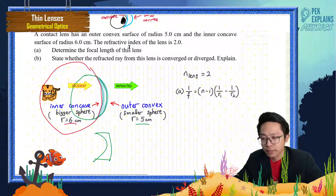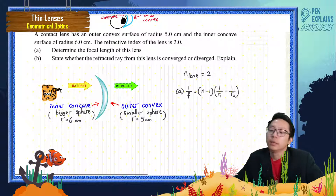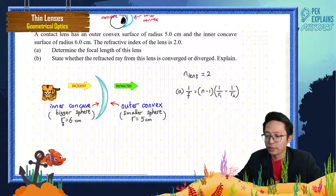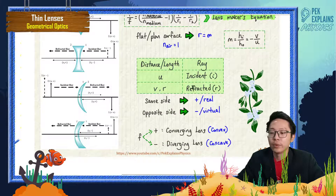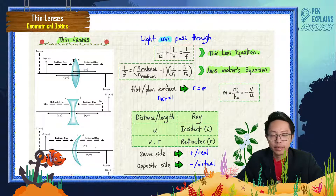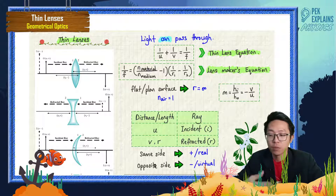Now, to determine the focal length, the refractive index of the lens is 2. We need to determine whether each radius is positive or negative. For a thin lens, the object distance is compared with the incident ray, while the image distance and radius are compared with the refracted ray. If the radius is on the same side as the refracted ray, it is positive; if on the opposite side, it is negative.